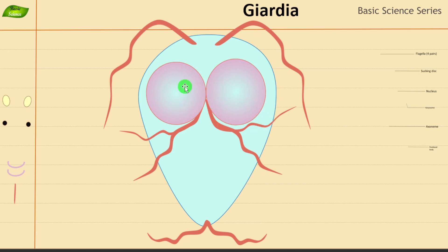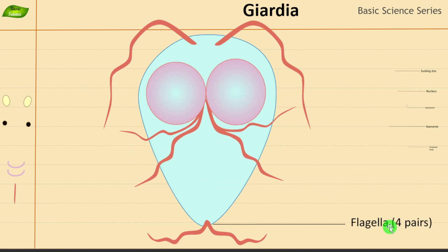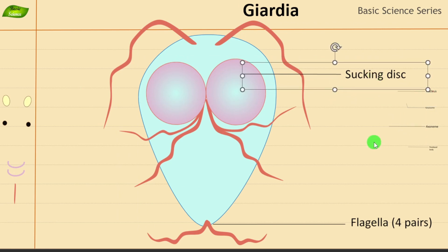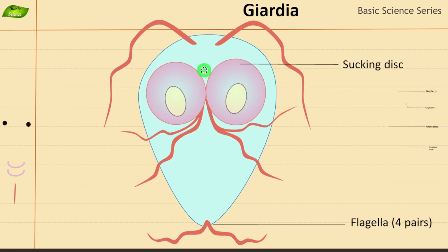Now let's label these structures. Starting with the flagella — in brackets, four pairs — so Giardia contains four pairs of flagella, totaling eight flagella. Next is the sucking disc. Then we introduce the nucleus. Giardia has two nuclei, and these give it that eye-like appearance in illustrations, contributing to its human-face-like look. There are also central structures inside the nucleus.